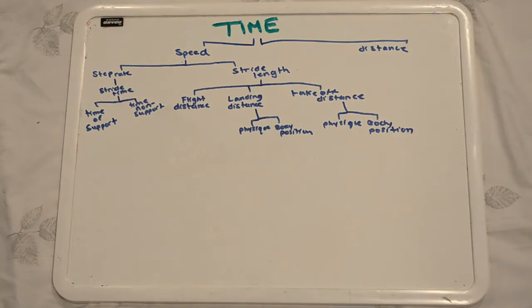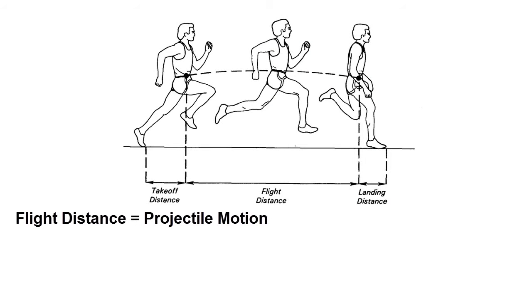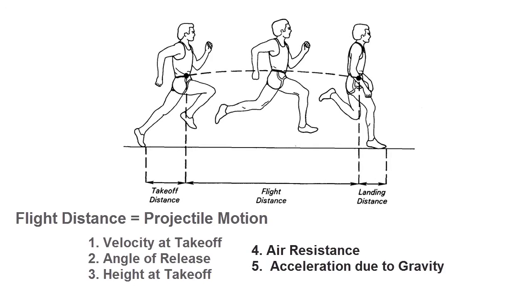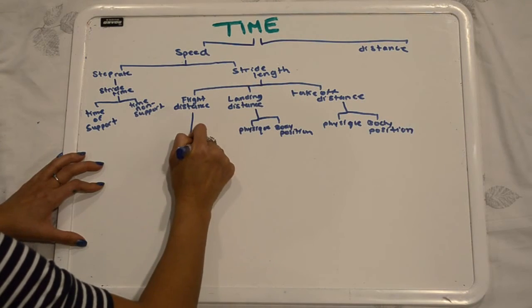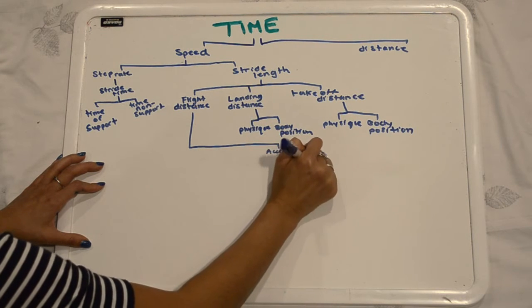We can now take it a step farther and look at flight distance. Flight distance is a condition of projectile motion, which can be broken down into these elements: velocity at takeoff, angle of release, relative height at takeoff, air resistance, and acceleration due to gravity. Let's add this to our model under flight distance.